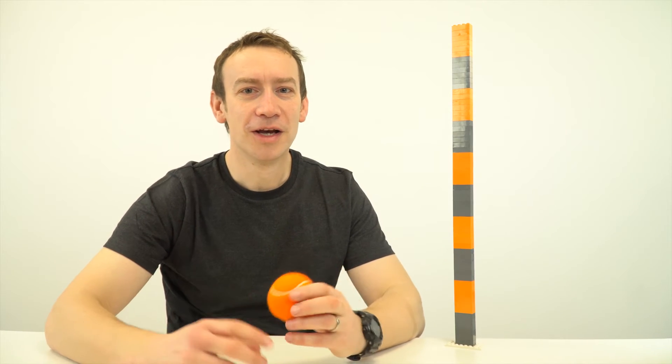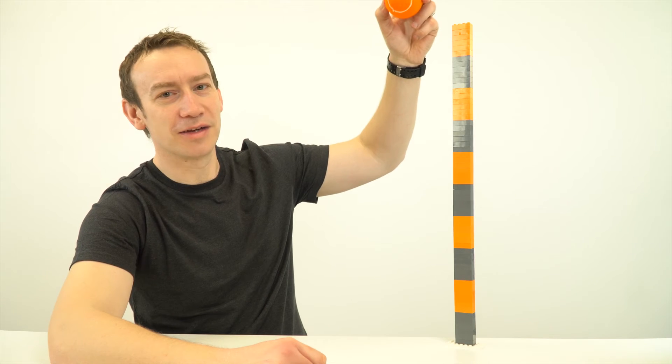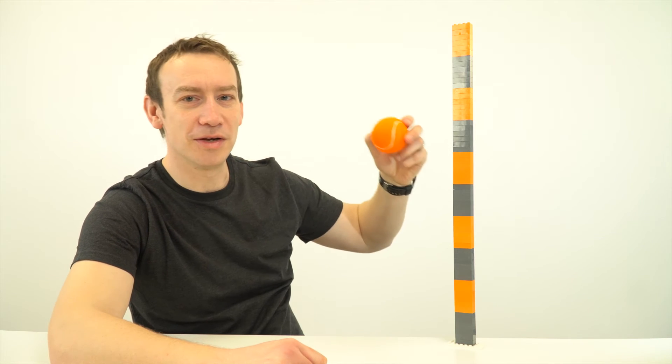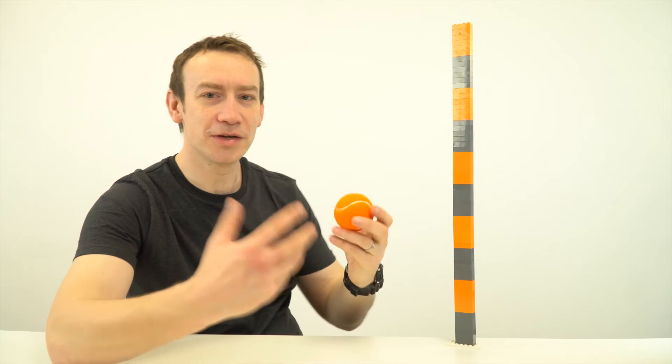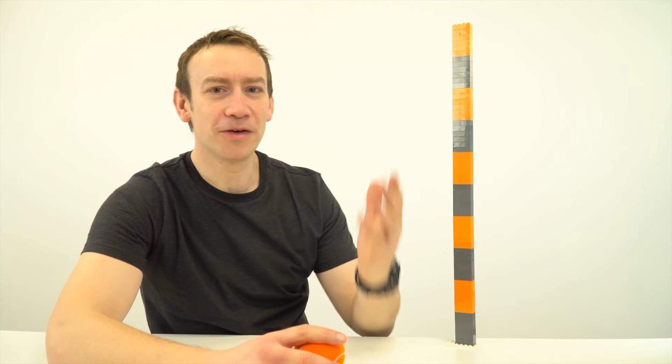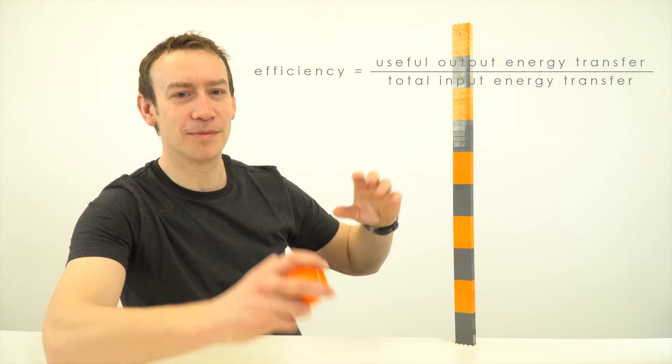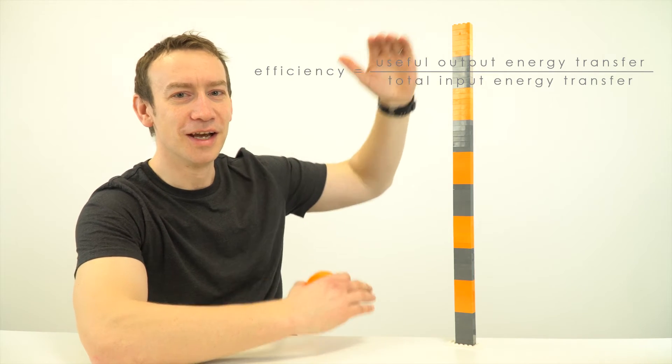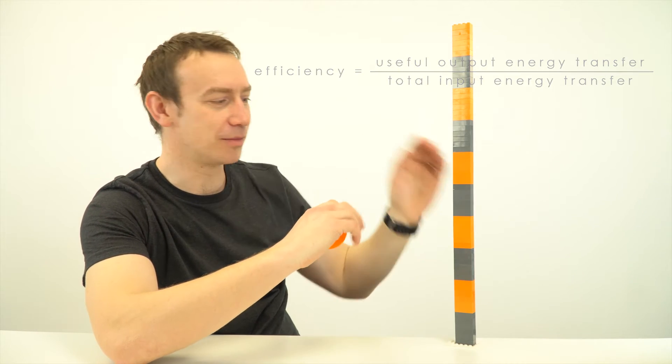That's all efficiency really is. It's just the ratio of how much energy we had at the start to the amount of energy that's been usefully transferred. There's two equations we can use. The first one is looking at the amount of energy transferred and we're thinking about the total amount of energy that goes in compared to the useful amount of energy that comes out.